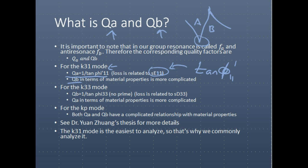So the QB then corresponds to tangent phi (no prime) — the tangent phi corresponding to the compliance in the 33 direction. And for the K33 mode, QA in terms of its relationship to material properties such as the compliance and the permittivity has a more complicated relationship. So typically for reporting, you can mention which way you measured it and at what frequency. The IEEE standard again suggests measuring the quality factor at the resonance frequency of minimum impedance.